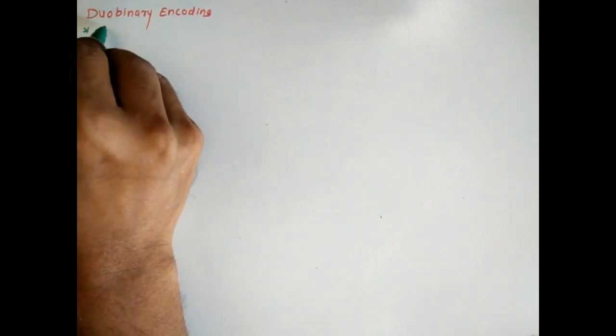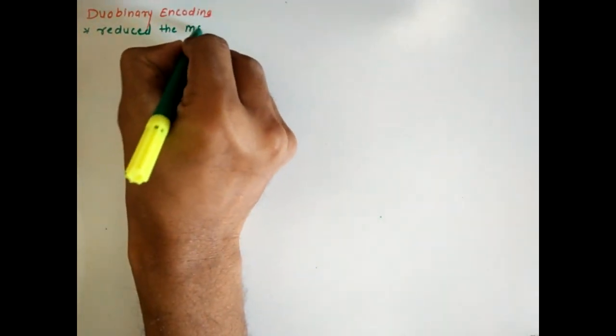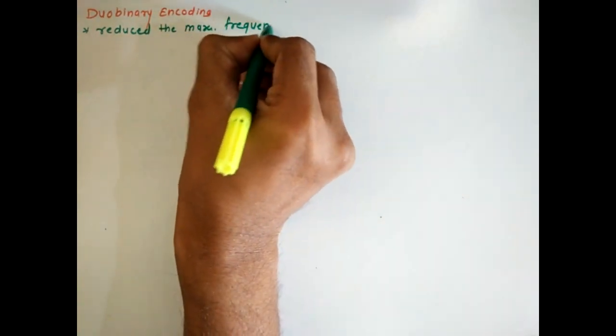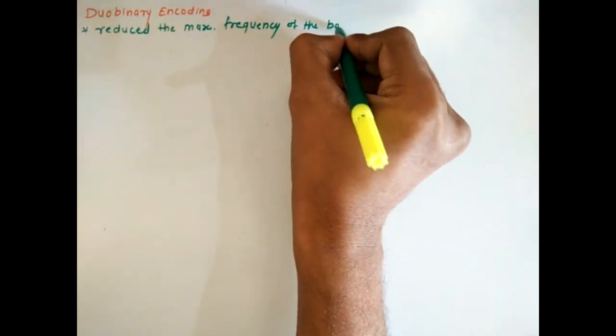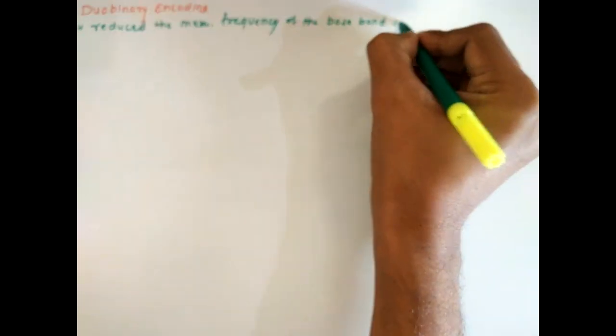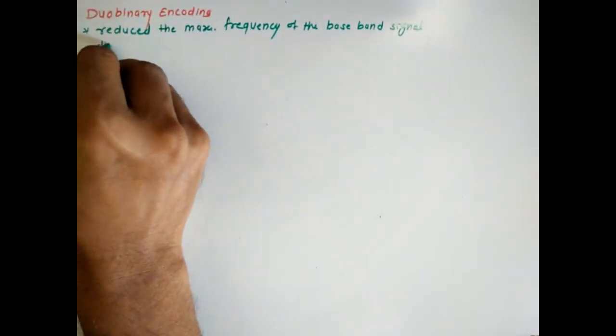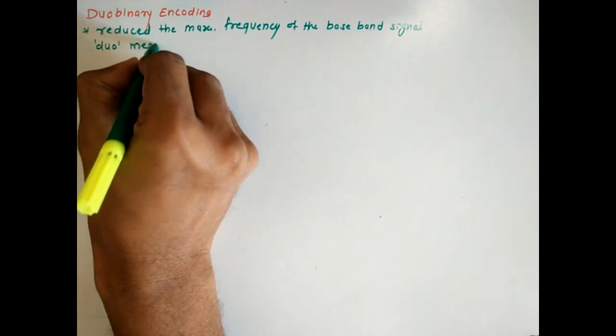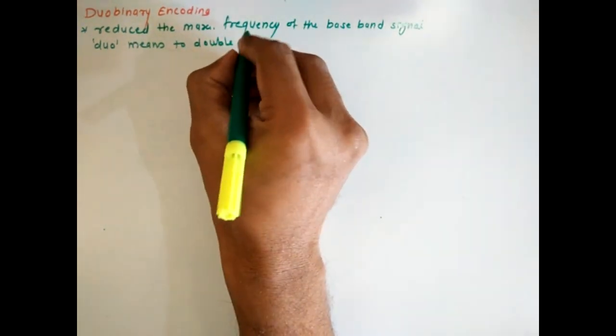Welcome you all. In this lecture we will study duo binary encoding. Duo binary encoding is used to reduce the maximum frequency of the baseband signal, and the word duo means to double the transmission capability.